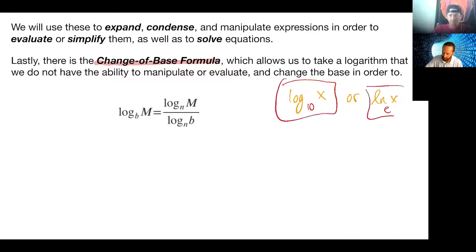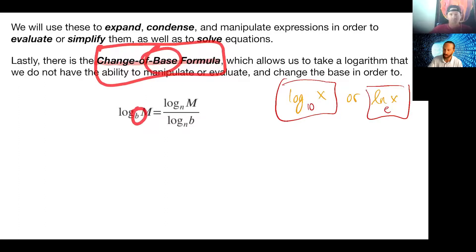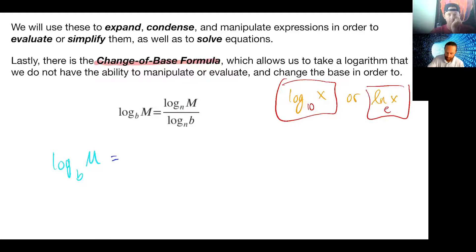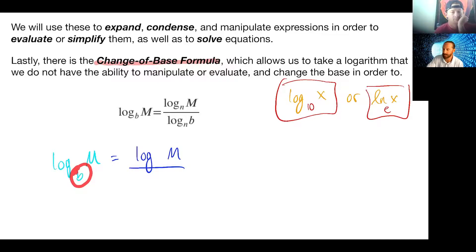Most calculators, unless you pay top dollar for one, only do base 10 or base e — which means we need something to change the base no matter what we're given. The change of base says: anytime you have the log of something with any base, you can change it to either common log base 10 or natural log base e. Here's how: you take what you had — the log of m — and to get rid of your original base, you divide by the log of that base.